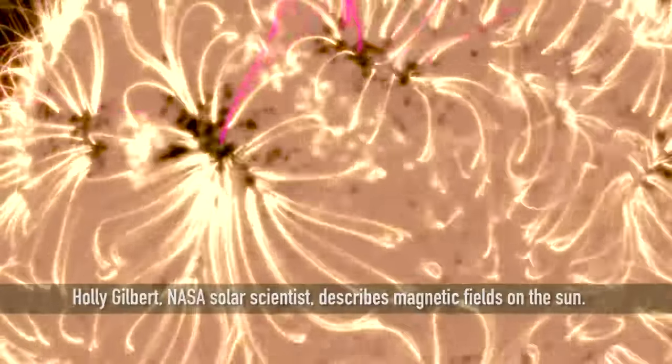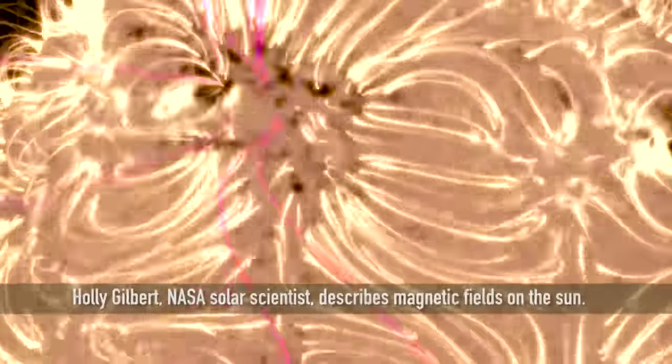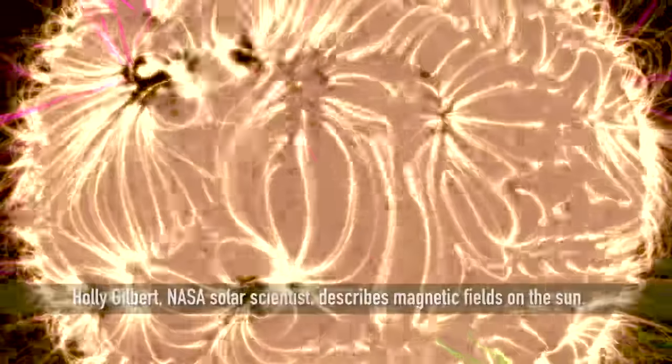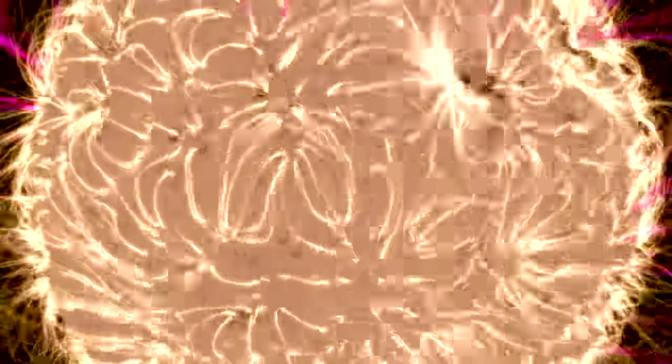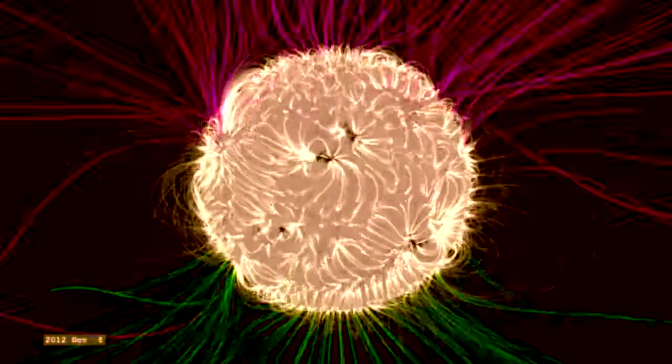The sun is a beautifully magnetically driven star, but we can't actually see magnetic field lines. They're essentially invisible and so we have to turn to models in order for us to see the global magnetic structure of the sun.